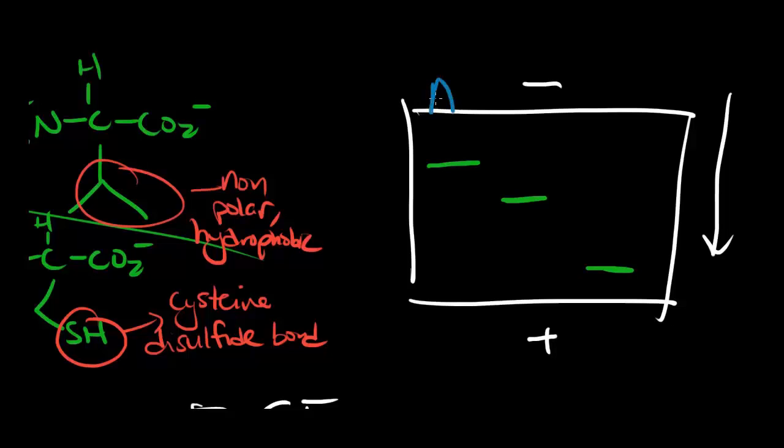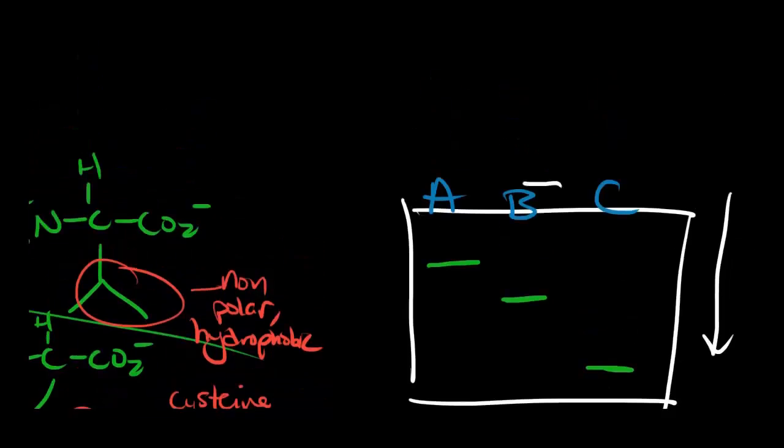Therefore, if I put three different proteins in this SDS page, which of the proteins is the smallest? The answer would be C, because it traveled the fastest.